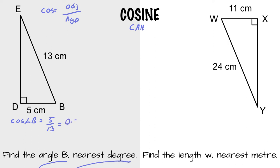In decimal form, 0.3846. Reverse. And that will give you 67 degrees. If B is 67, E is 23.